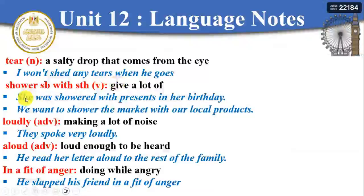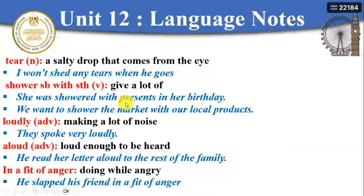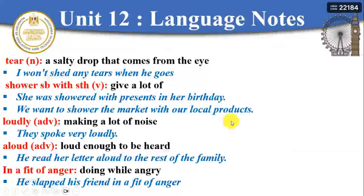Shower somebody with something is an important verbal collocation. To shower someone with something means to give them a lot of it. For example: 'I shower Miss Amani with thanks' means I gave her a lot of thanks. 'She was showered with presents' means they gave her a lot of presents on her birthday. 'We want to shower the market with our local products' means we are going to give a lot of our products to the market.